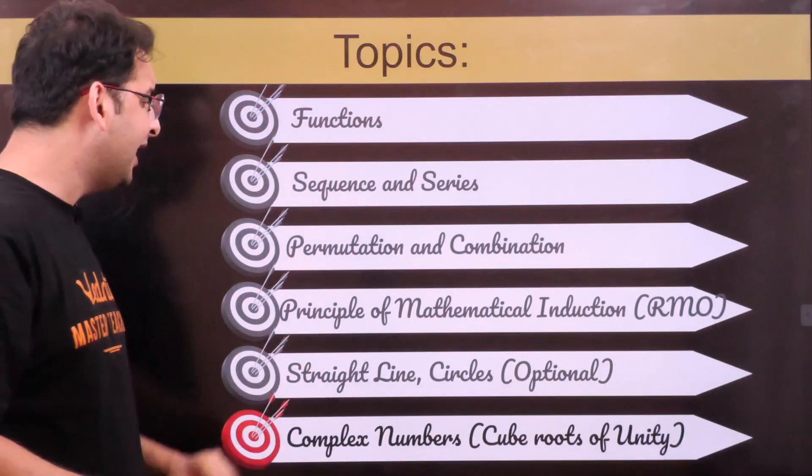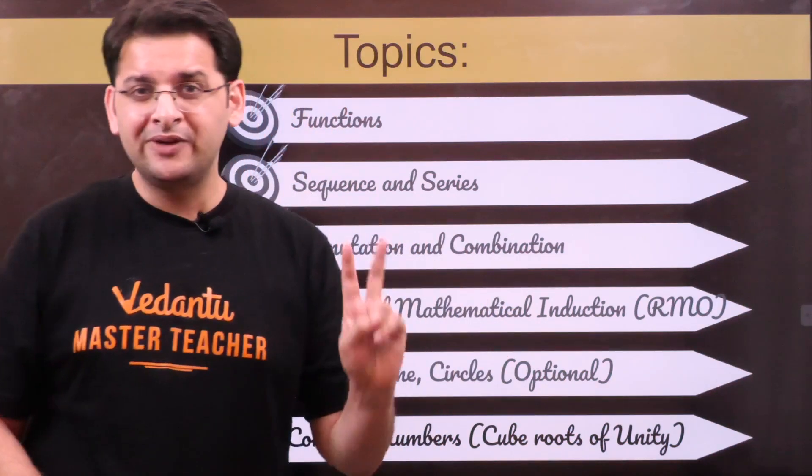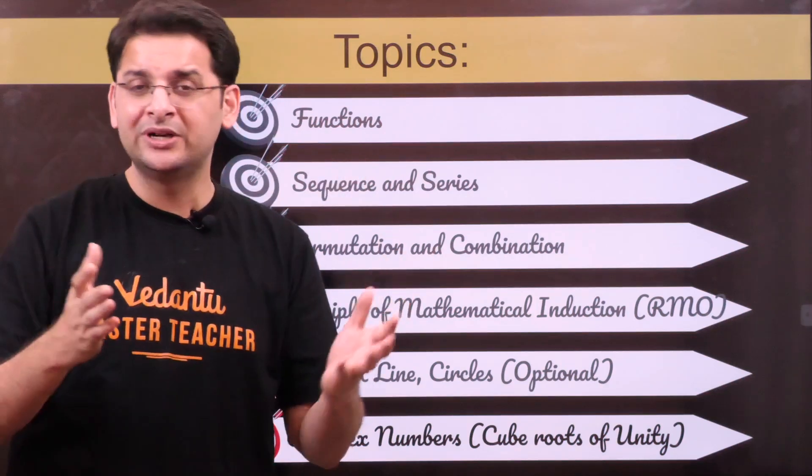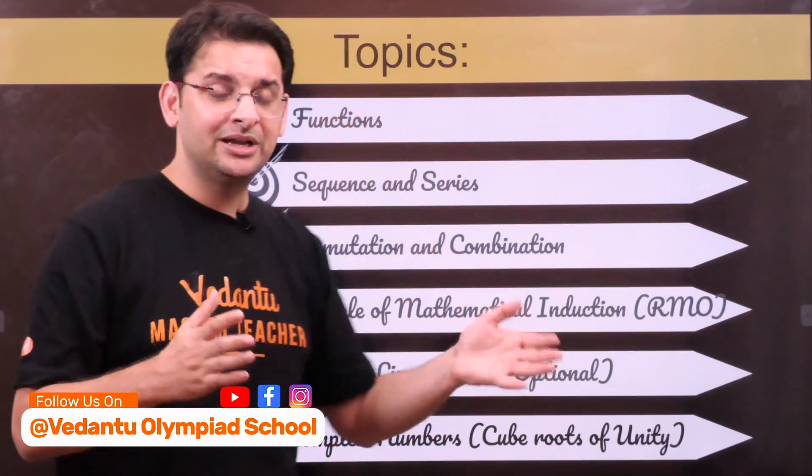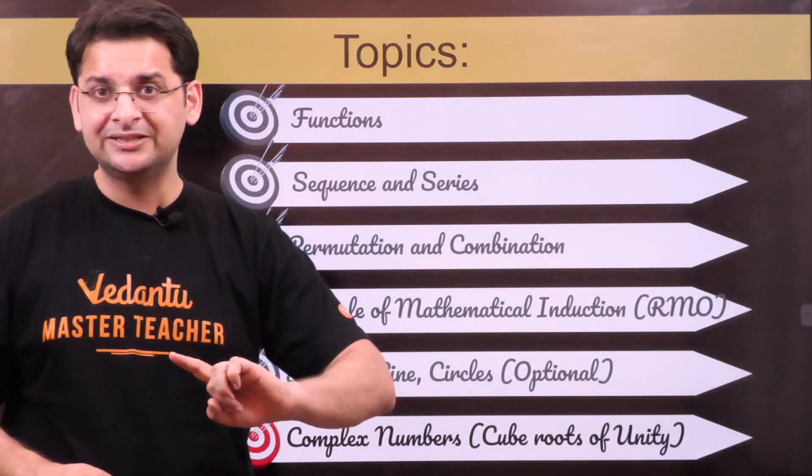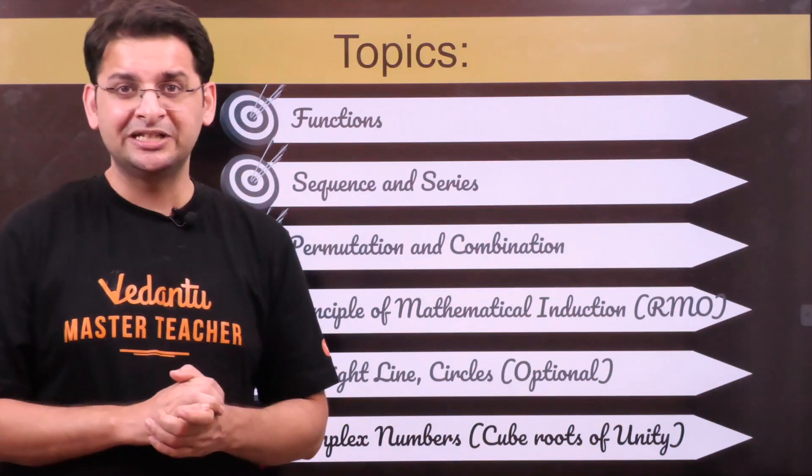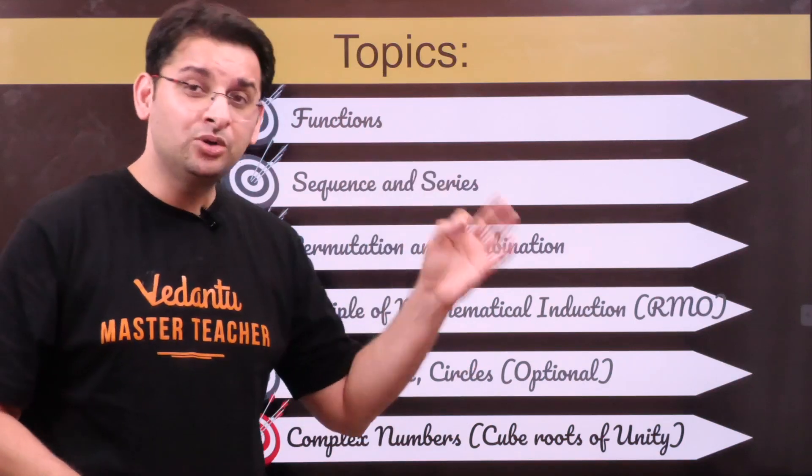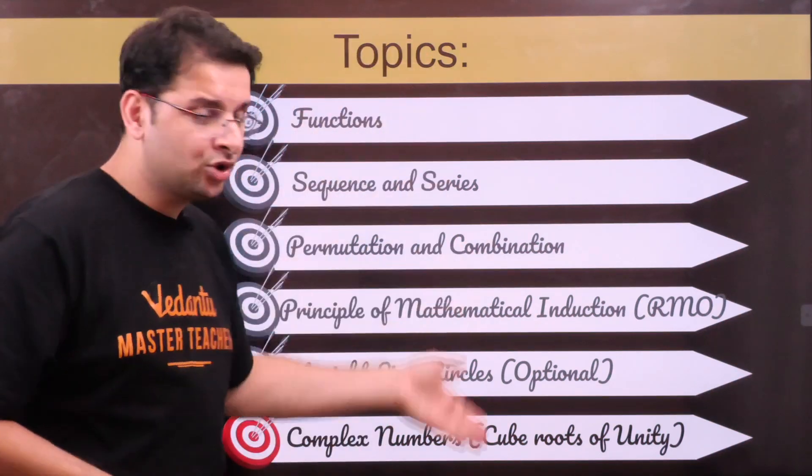Last but not least is complex numbers. In this, I've specifically mentioned cube roots of unity because there have been questions on this. This chapter is very easy to understand with help from any tutor or teacher. If you have done algebra or quadratic equations, you will understand this from NCERT only. Cube roots of unity, although not part of NCERT, you have to do from RD Sharma or JEE books. Do it yourself and it will give you confidence, particularly if you want to take up sciences in class 11 and 12.